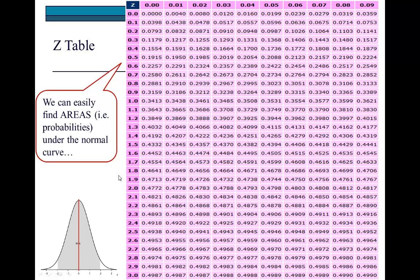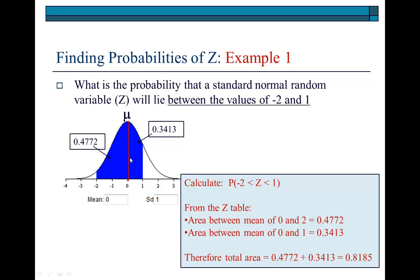And to confirm, go back here. Z value of 2. Look at the area, 0.4772. So, right here, if you add these two together, that's your answer right down here, 0.8185. And therefore, the answer to the question, what is the probability that a standard normal random variable will lie between the values of minus 2 and 1 is 0.8185, approximately. All right. And in layman's language, you can say that there is about 81.85% chance that the value of Z would lie between minus 2 and 1.